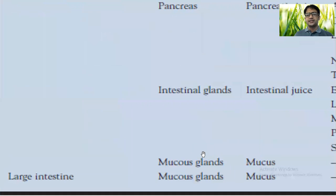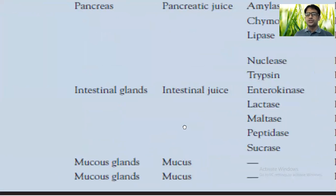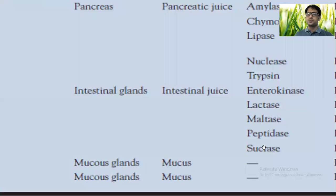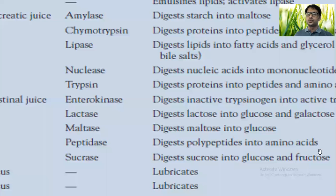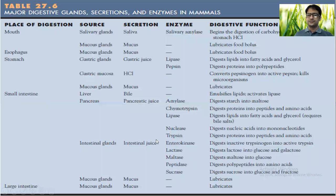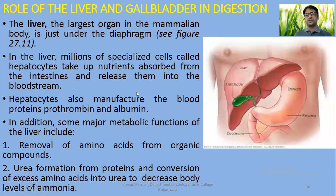Whether it is in the small intestine or large intestine, mucus functions in lubrication. In the large intestine, no digestive enzymes are produced — it produces mucus only, which is helpful in the lubrication and smooth movement of contents through the digestive tract. This is a summary of the different parts and their associated enzymes.